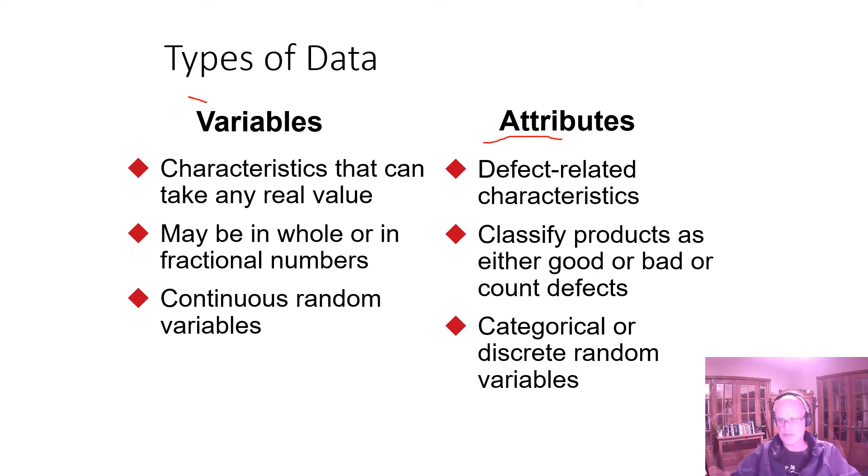Then on the other hand, you have what's called attributes and attributes are binary. They are yes, no, fail, pass. And so they are defect or problem related characteristics. They're either good or bad, or they count good outcomes or bad outcomes. And they're categorical or discrete random variables. It's one or the other. It is pass, fail, on time, late, all of those sorts of things. So if you remember nothing else, you need to understand that variables and attributes have different types of statistical process control charts because we think about them differently.